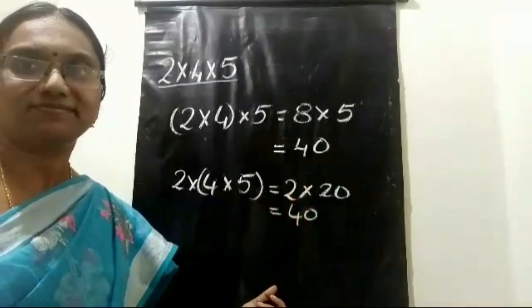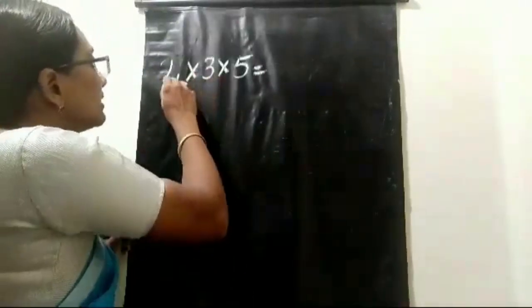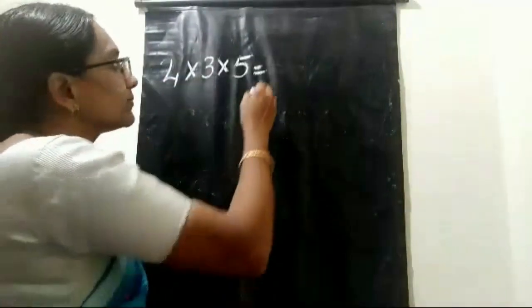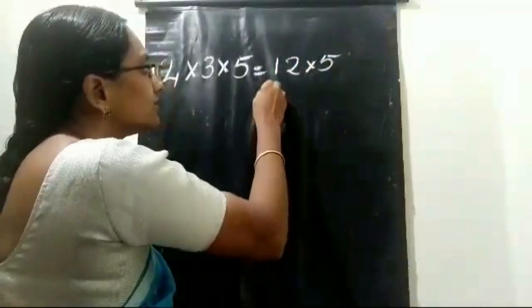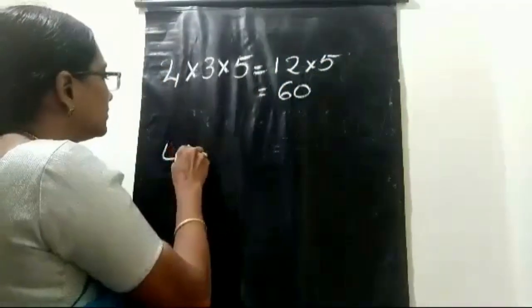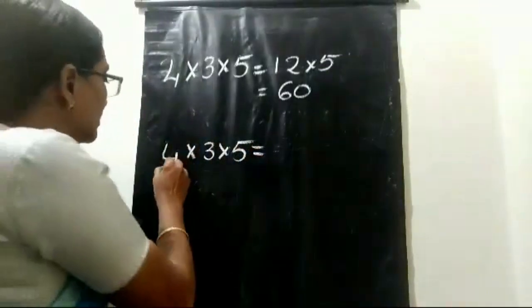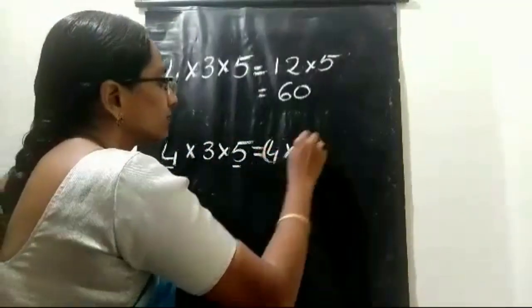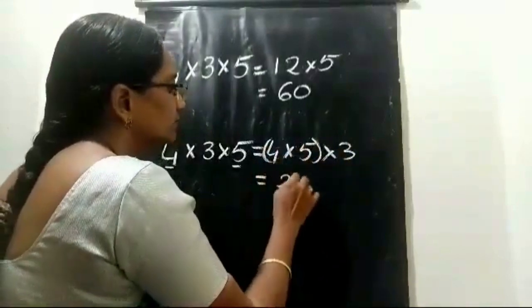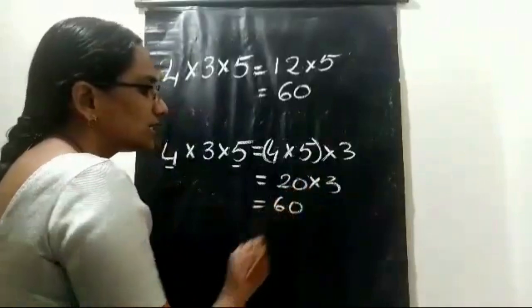See this example: first multiply 4 into 3, which is 12, then 12 into 5 equals 60. Now to make the process easy, I'll change the order and multiply 4 into 5 first: 4 fives are 20, then 20 into 3 is 60. The answer is the same either way.